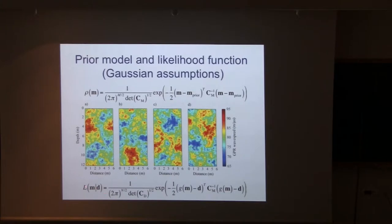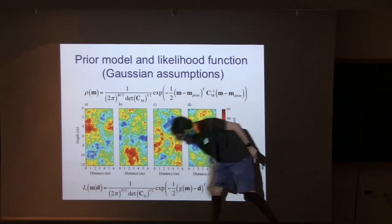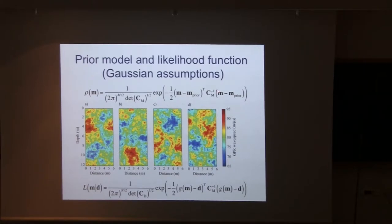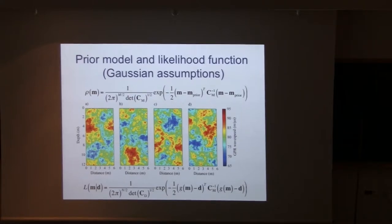The likelihood, assuming Gaussian errors, has exactly the same form as the prior. The difference is that instead of comparing m to a prior model, you're comparing your forward model prediction to the observed data, and the covariance matrix Cd describes correlation of data errors rather than model parameters. Most inversions — even deterministic ones — make these underlying Gaussian assumptions. Even in the Bayesian literature, people often say they can use any distribution, then for simplicity assume Gaussian. It's a very common setup.